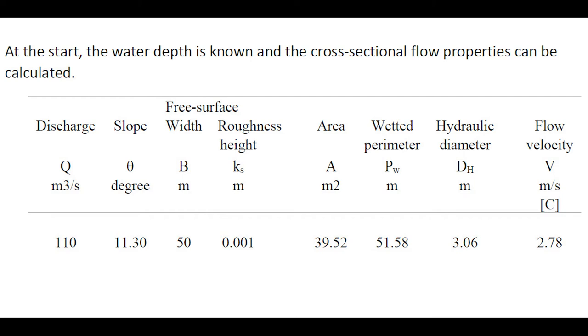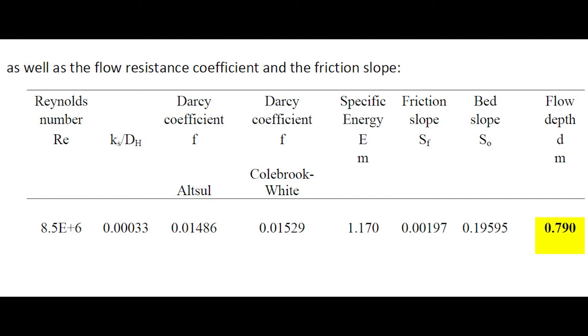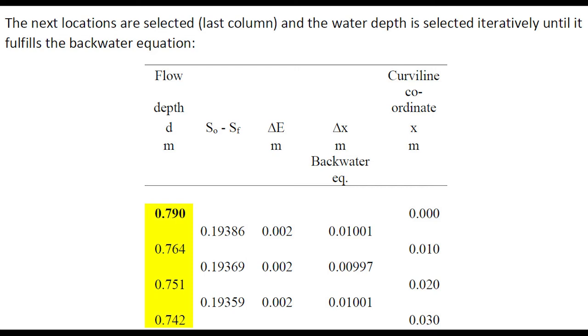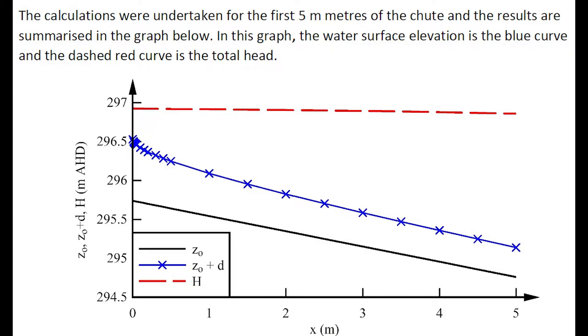At the start, the water depth is known, and the cross-sectional flow property can be calculated at that location, as well as the flow resistance coefficient and the friction slope. The next locations are selected, and the water depth is computed iteratively until it fulfills the backwater equation.